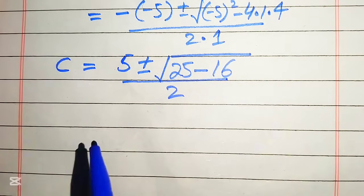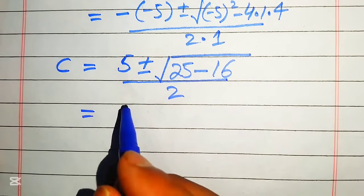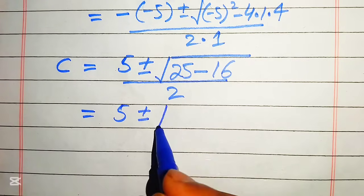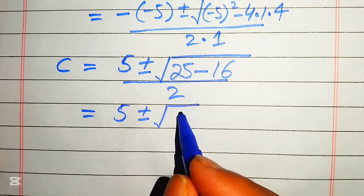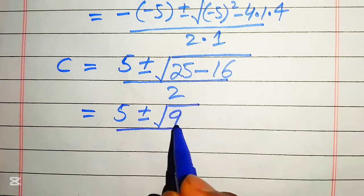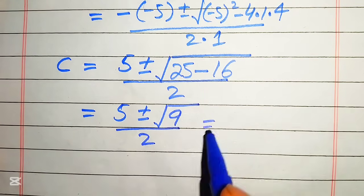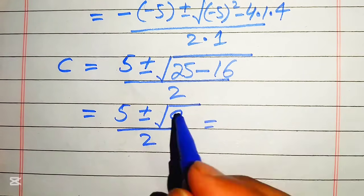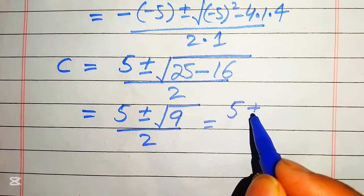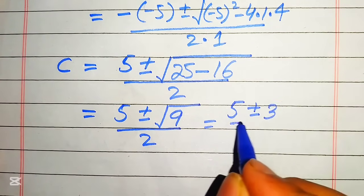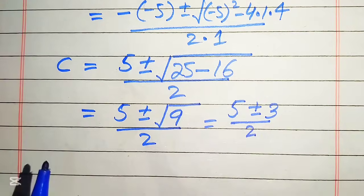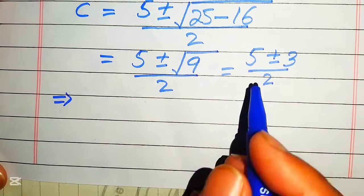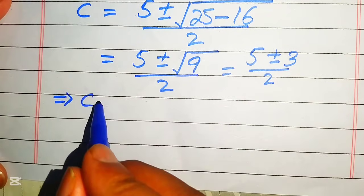In the next step we have 5 plus or minus square root of 25 minus 16, which is 9, divided by 2. We focus on the square root term: the square root of 9 equals 3, so we have 5 plus or minus 3 divided by 2. Now we split this into two cases.